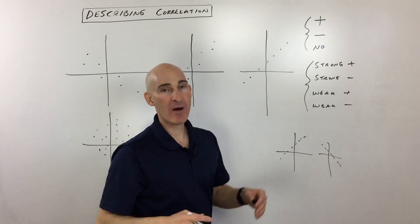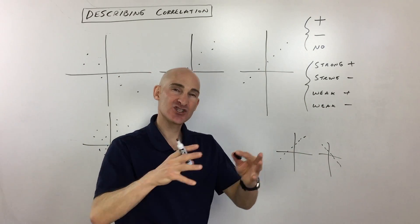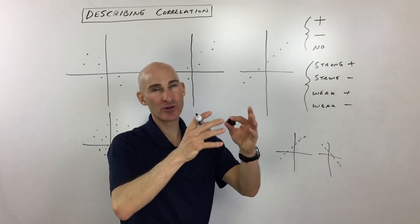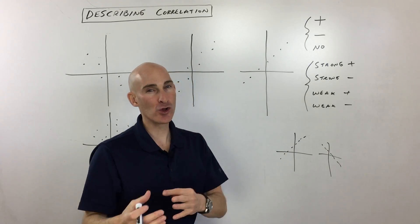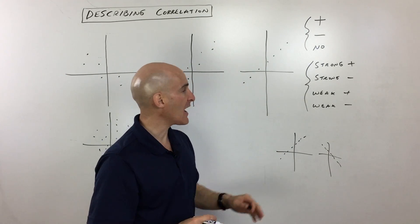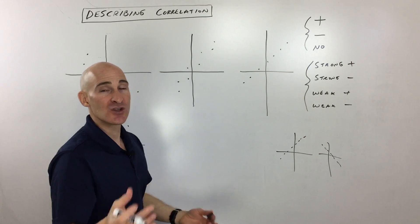A weak positive means it's generally going up, but the points aren't really close to being on a perfectly straight line. Same thing with weak negative.